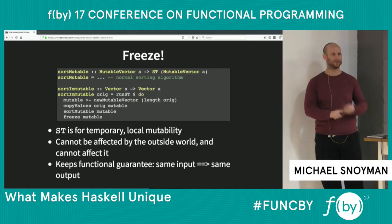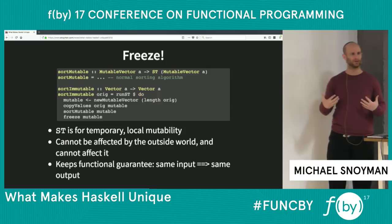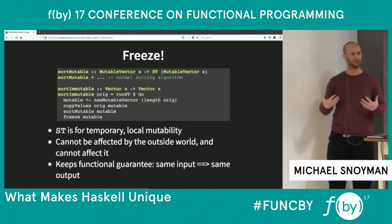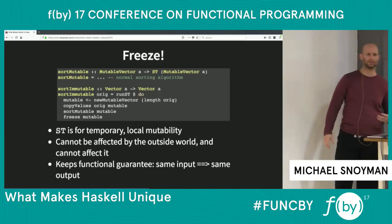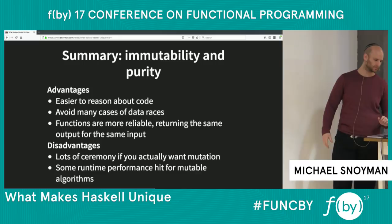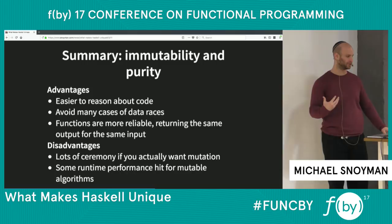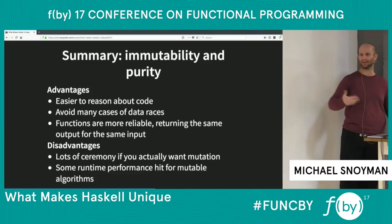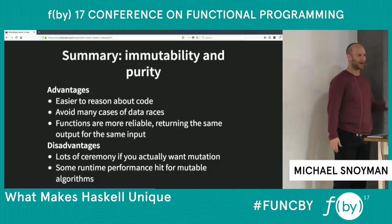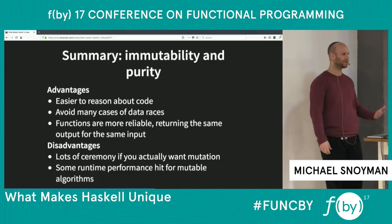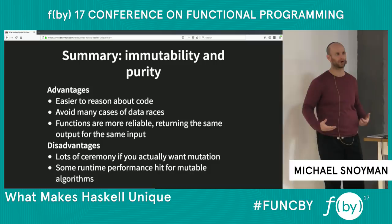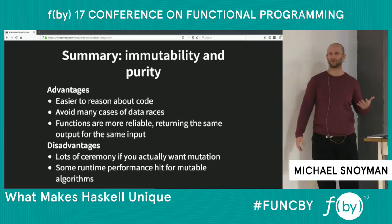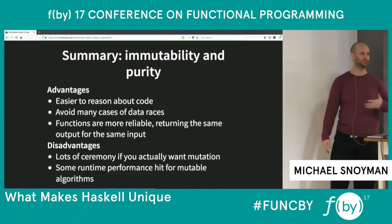So immutability and purity give us the ability to reason about our code, avoid data races — which makes concurrent programming much simpler — and treat functions as proper mathematical functions where the same input gives the same output. The disadvantages are that if you have an inherently mutating program, you'll find it more verbose in Haskell than in another language. And with mutable algorithms using the extra copy approach, there is a tiny performance overhead compared to using mutable versions throughout.